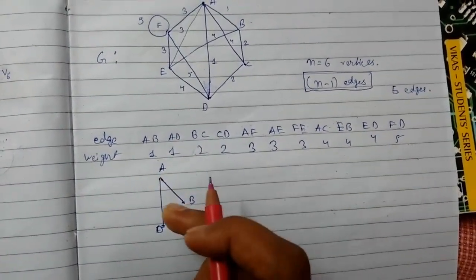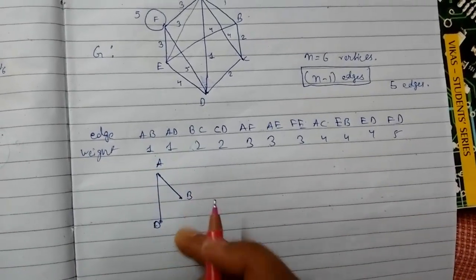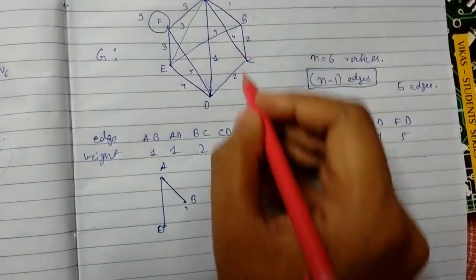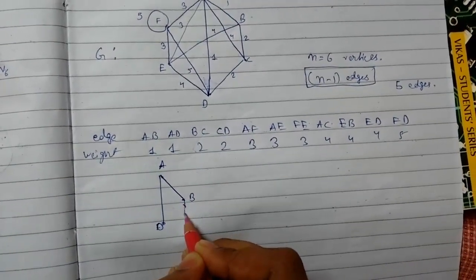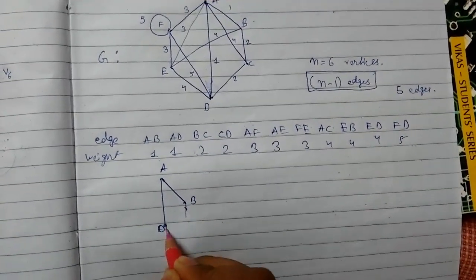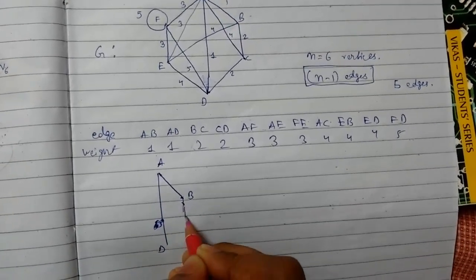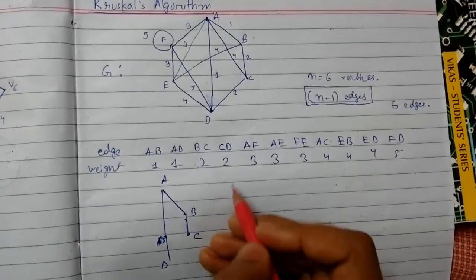Step 1 should be AB, step 2 should be AB and AD. Now we will select BC. BC doesn't create a circuit, so BC is here. Now if you join CD it will become a circuit, so our spanning tree will not be accepted. CD is cancelled.